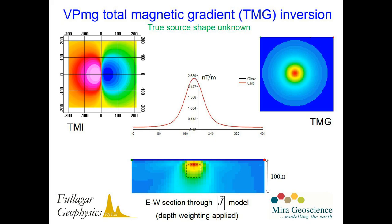The other approach implemented is for the 3D analytic signal or the total magnetic gradient. For the same dataset, if we convert the data to the 3D analytic signal, we can again recover a sensible representation of that magnetic cube. So now we're inverting purely for the amplitude of our magnetisation in the body — not inverting for susceptibility but for the amplitude of our magnetisation vector. This is another possible approach to circumvent the remnant issue as much as possible.